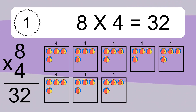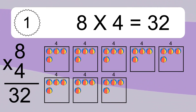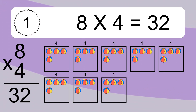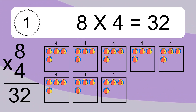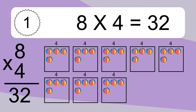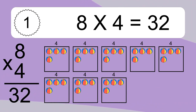We have 8 boxes, and each box has 4 colorful balls inside. If you count all the balls in all the boxes together, you will have 8 times 4 balls. This equals 32 balls.